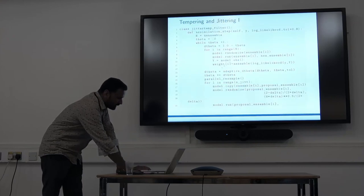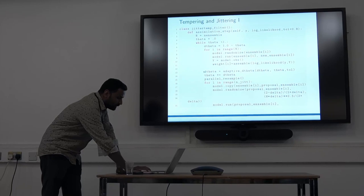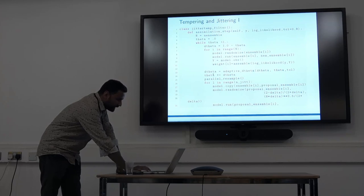For tempering and jittering, this theta should be less than one but eventually should be one. For jittering we randomize, then run, then calculate weight. When we see ESS is less than one, we multiply delta theta with the weight function. Finally we come out if we've achieved 80 percent here.